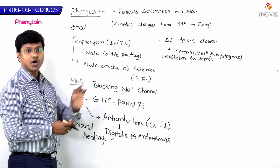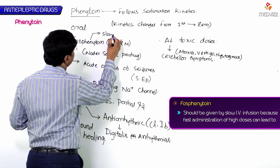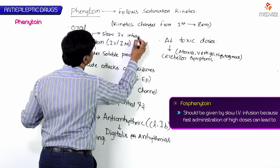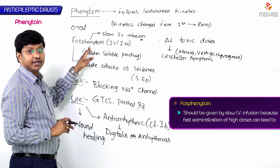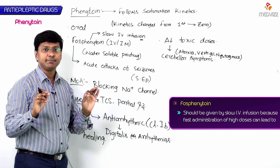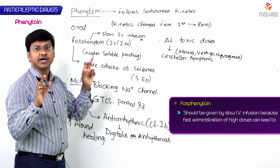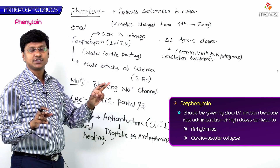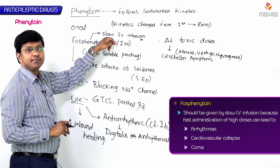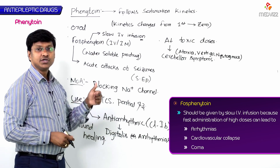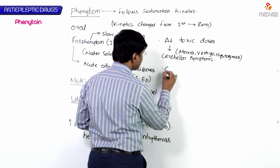Whenever giving fosphenytoin intravenously, it must be given by slow IV infusion. Fast administration of phenytoin at very high doses can lead to arrhythmia, cardiovascular collapse, and coma.